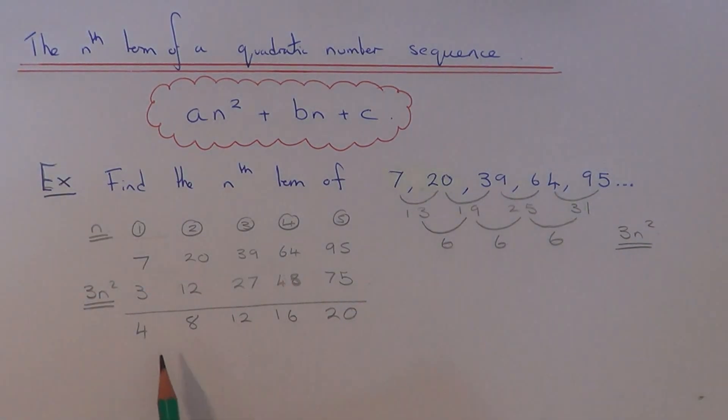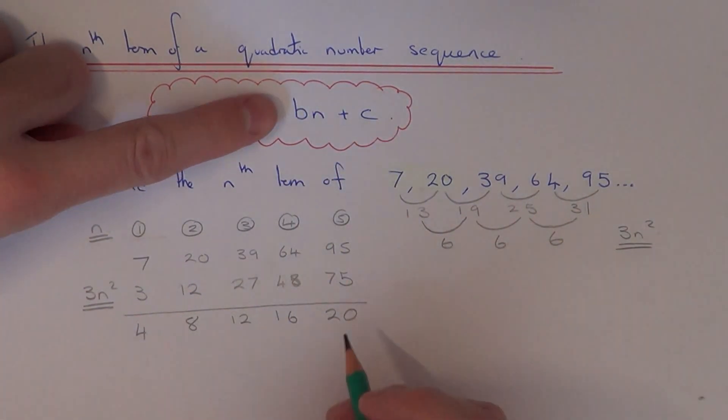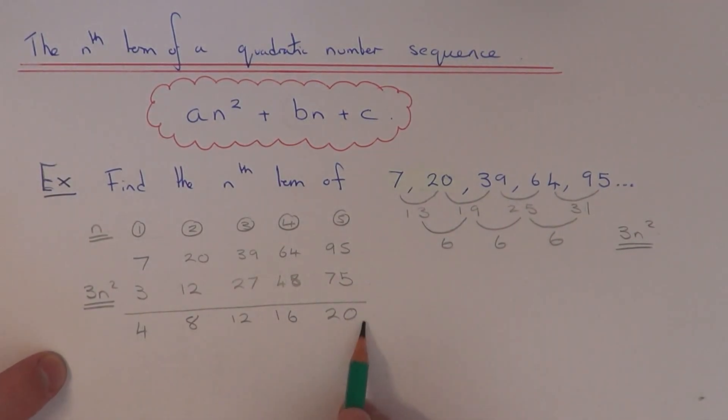So what we're left with then is a linear sequence. Now you should be able to work out quite easily the formula, well the nth term of a linear sequence. And this will give you the remaining bits in the formula for the quadratic sequence. So the formula for this one is quite easy. It's just going up in 4's. So this sequence here is 4n.